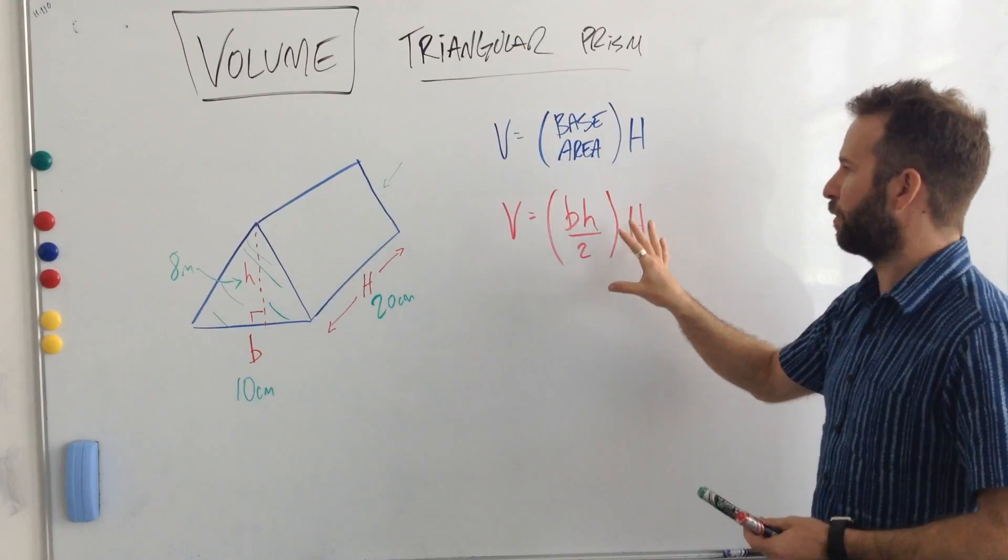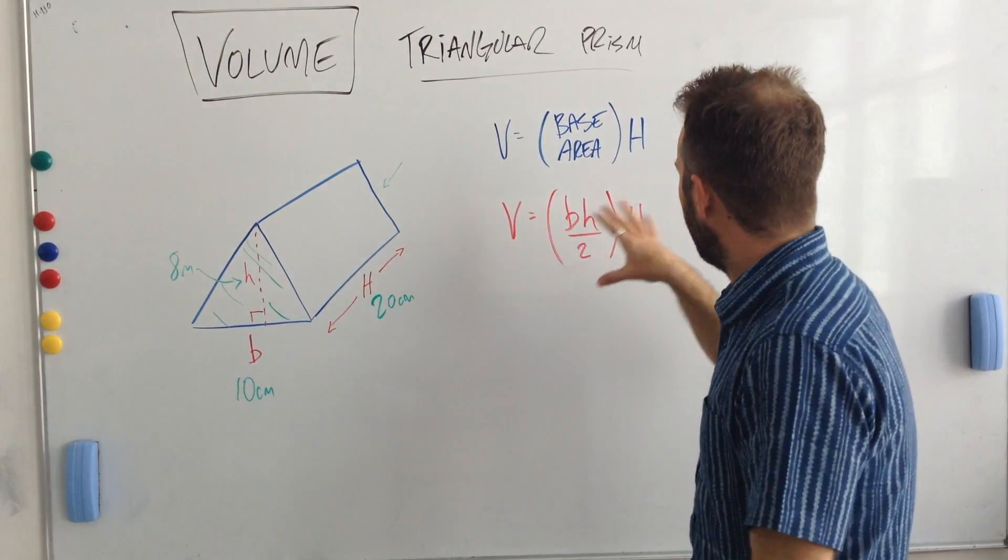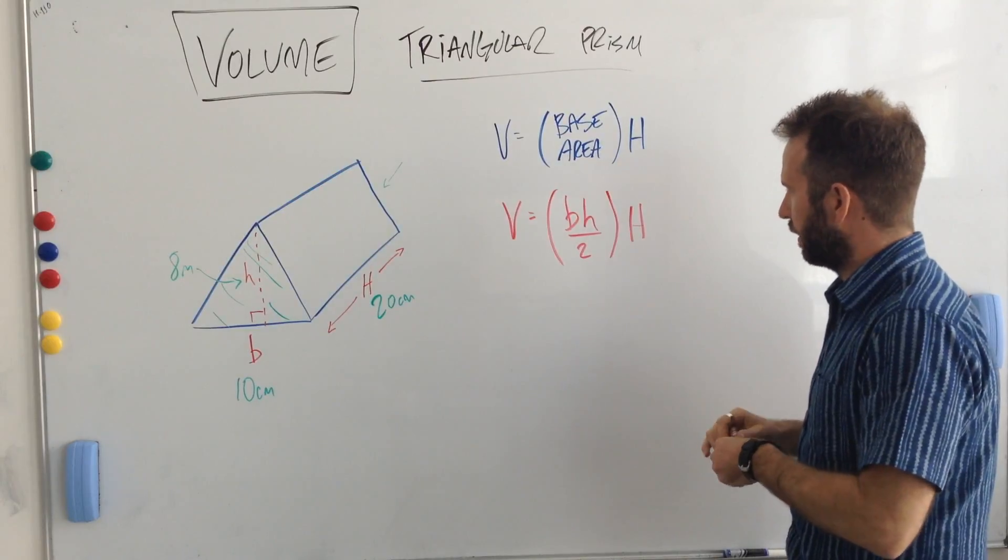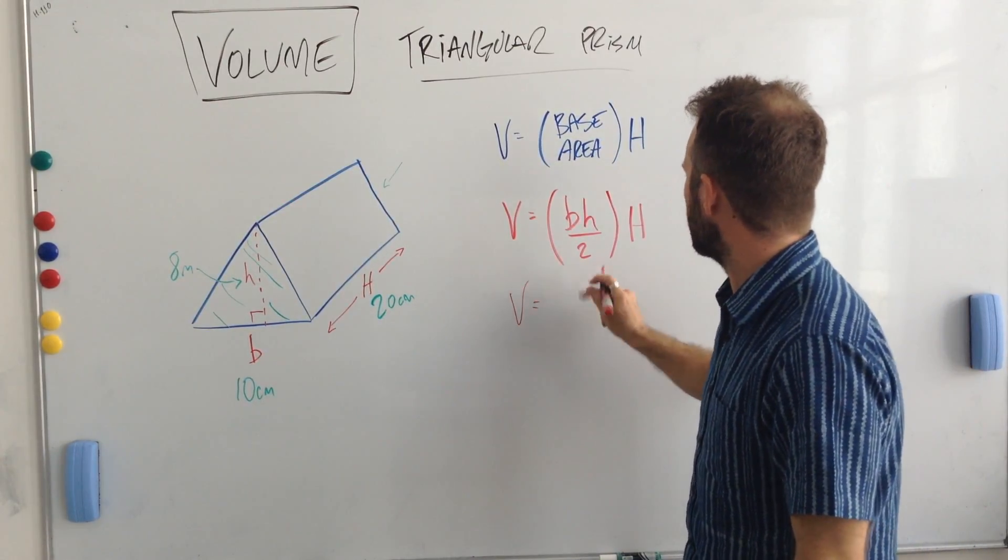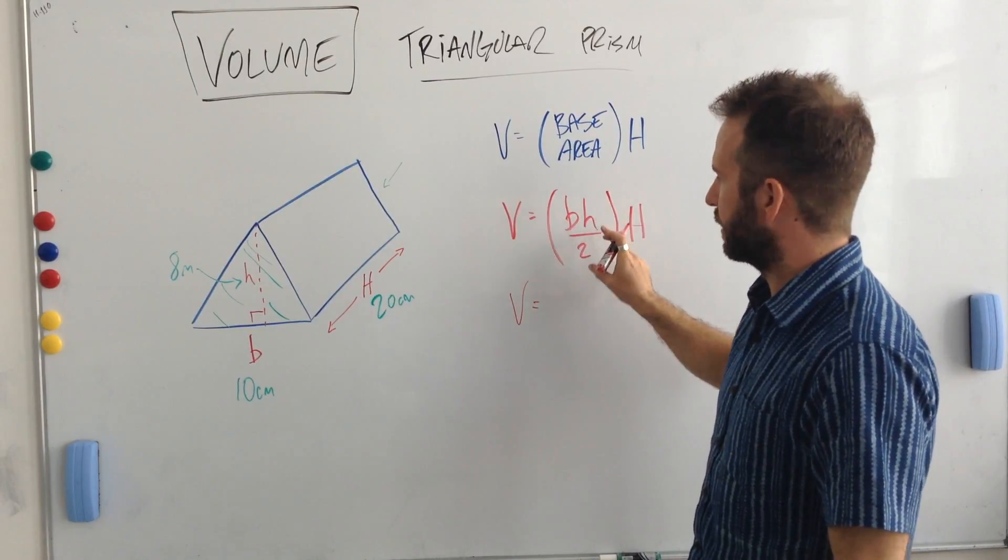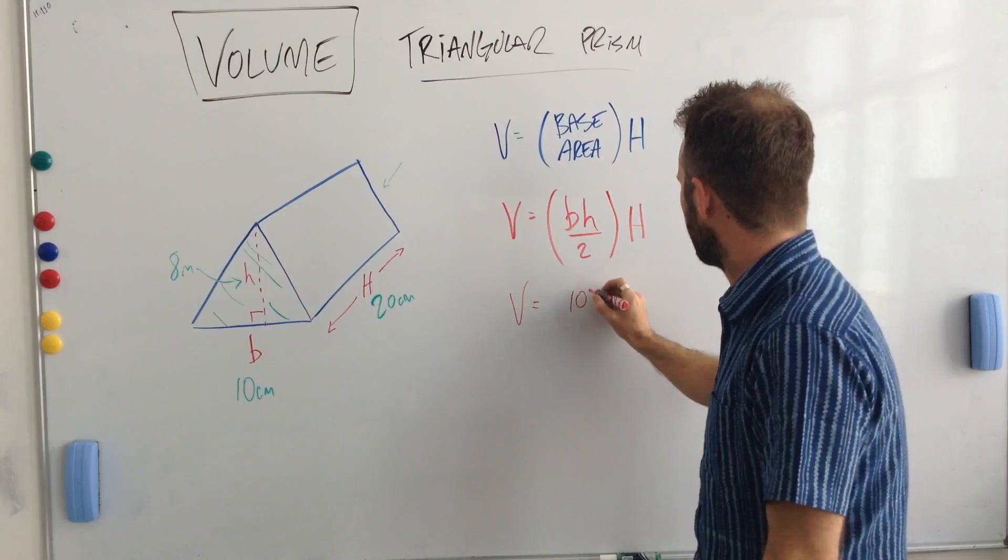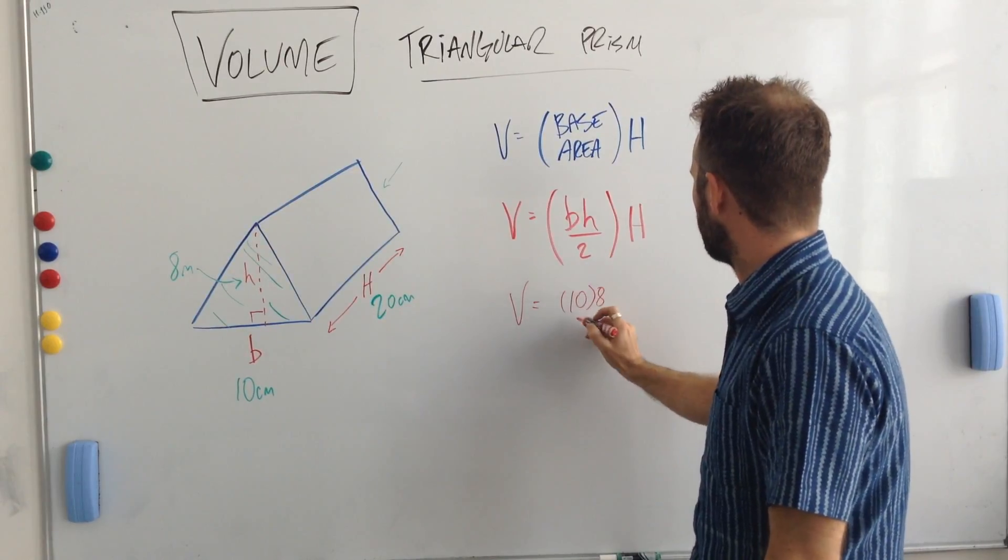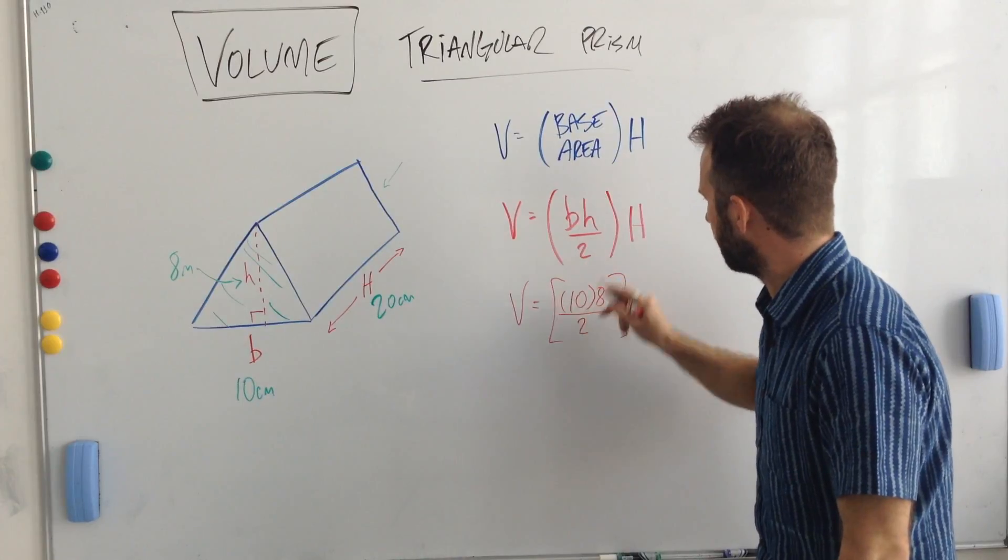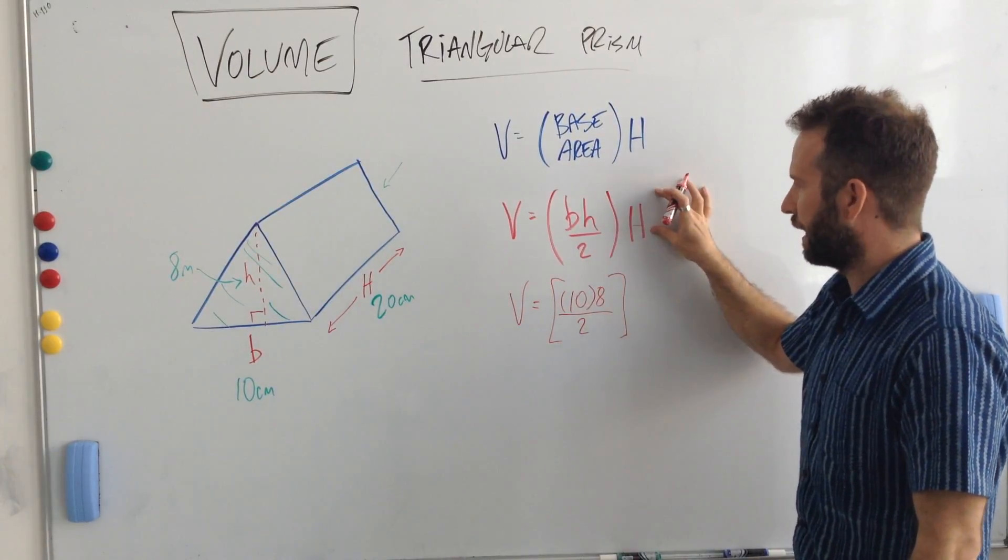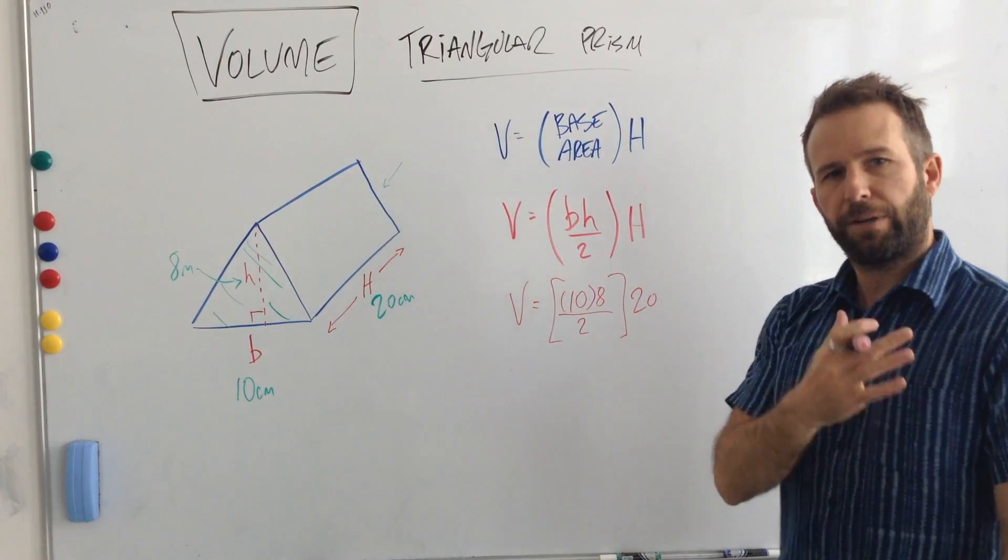So let's start using the formula, taking the measurements that we have and calculating our volume here. So what we've got, volume is equal to little b times little h, or base times height. We see 10 and 8, so I'm going to say 10 multiplied by 8 all gets divided by 2. That's for that first part there. And of course that gets multiplied by big H, which is 20. So here's our formula. Here are the numbers now in our formula.